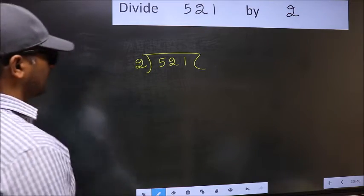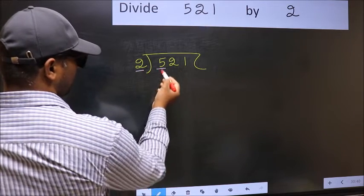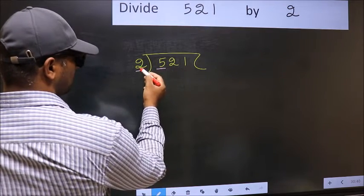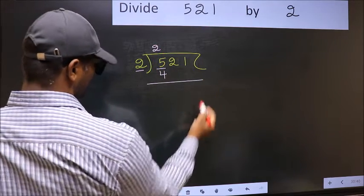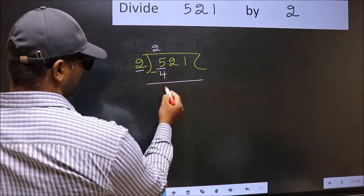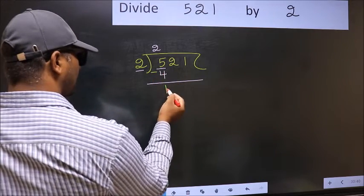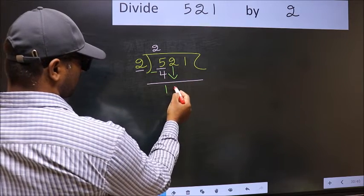Next. Here we have 5. Here 2. A number close to 5 in 2 table is 2 times 2 equals 4. Now you should subtract. 5 minus 4, 1. After this step, bring down the beside number. So 2 down.